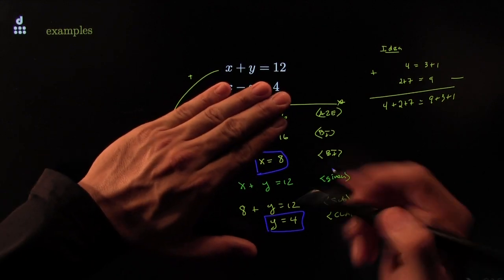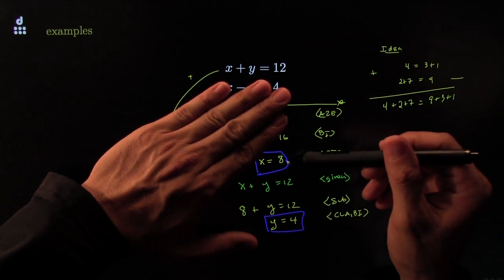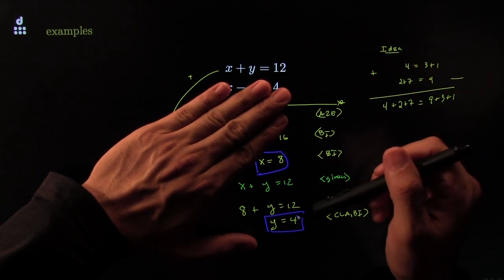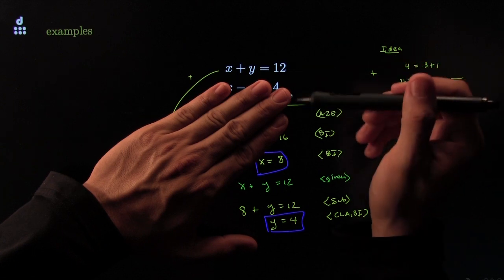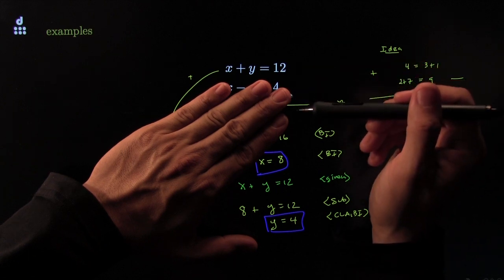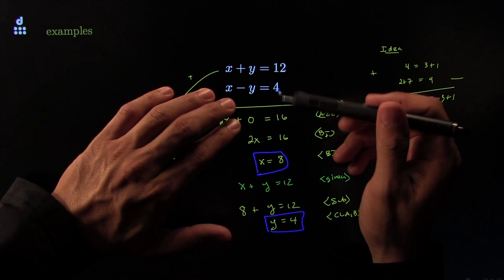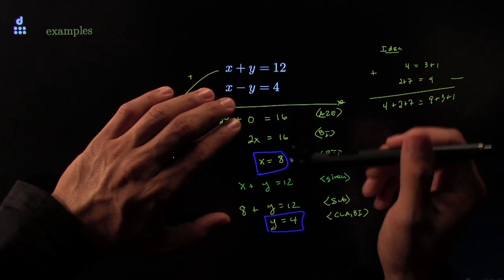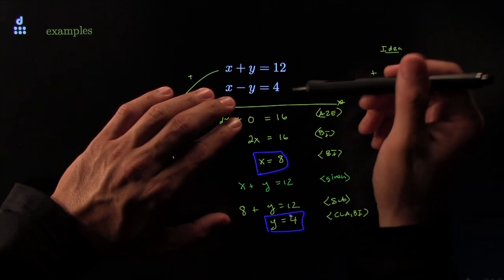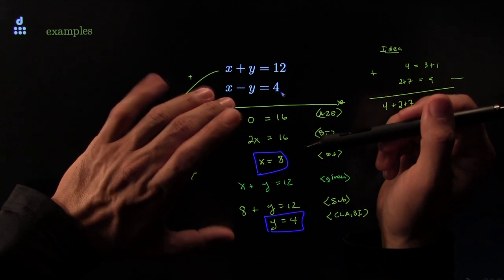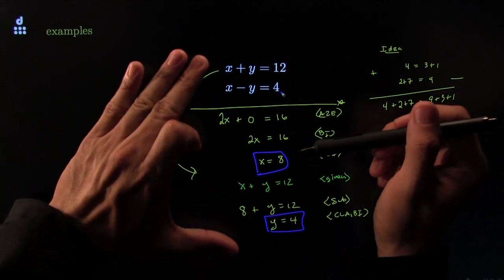Let's test it. We were looking for two numbers that when you add them you get 12. If I add 8 and 4, I get 12. We were also looking for such numbers that when you take the difference you get 4. Well, 8 minus 4 is indeed 4. Winner, winner, chicken dinner. That's nice.